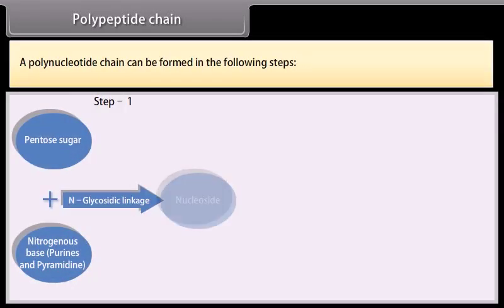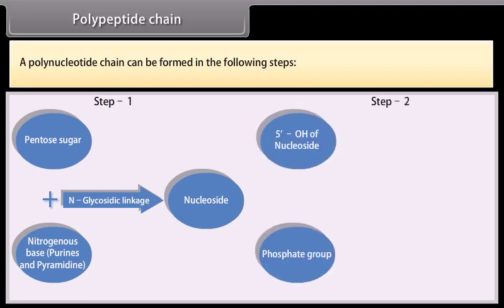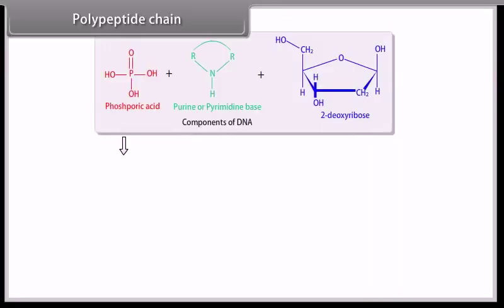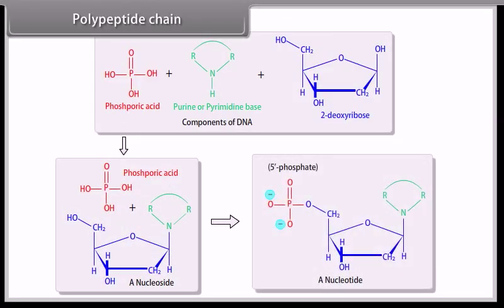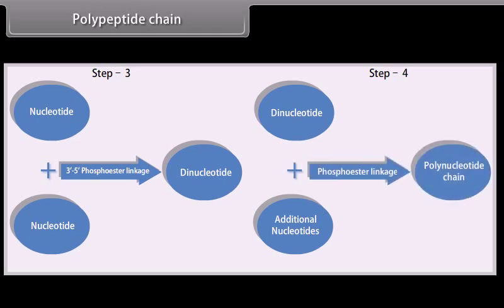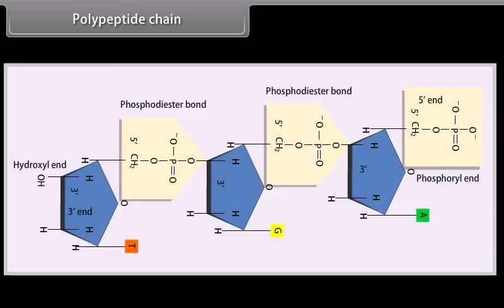A polynucleotide chain has a phosphate moiety at one free end of ribose sugar. This is known as the 5-prime end of the polynucleotide chain. The other free end of ribose sugar has an attached OH group. This is called the 3-prime end of the polynucleotide chain.